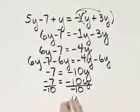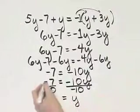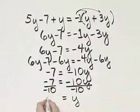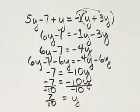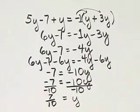And notice what we have. On the right side, we have y. On the left side, a negative divided by a negative is a positive, so we have 7 over 10. And that is my solution for y.